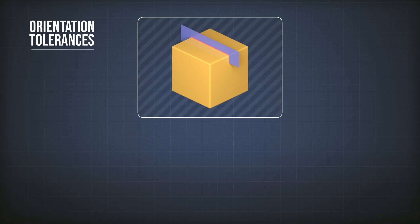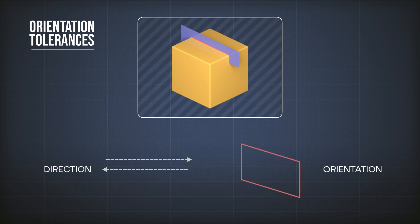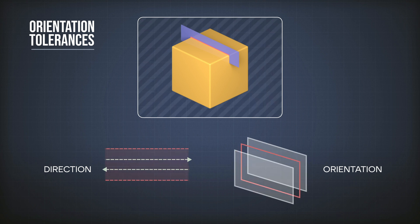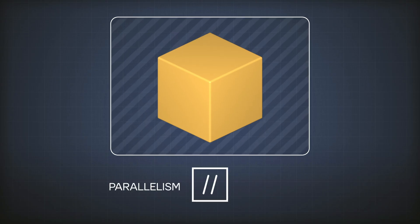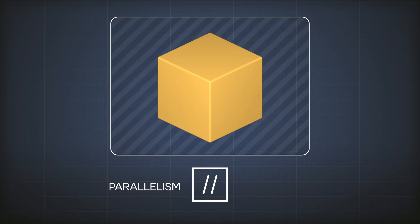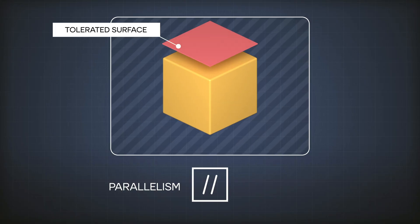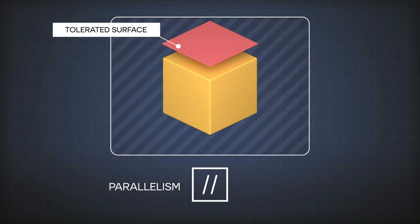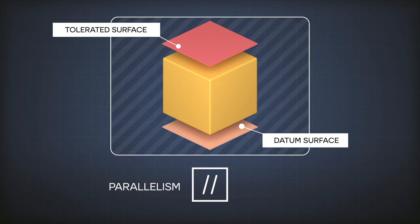The orientation tolerances are tolerances that describe the direction or orientation of an element with relation or with reference to another element on the part. For example, we want to control the parallelism of a surface with respect to another surface — we want to say that this surface has to be parallel to something else. So with orientation tolerances, we always require a reference or a datum.